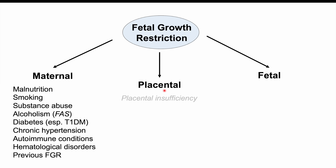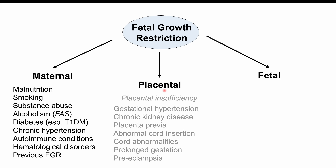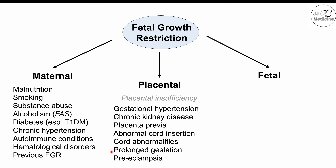In the placental category, causes relate to placental insufficiency — insufficient exchange of gases and nutrients across the placenta. Specific causes include gestational hypertension, chronic kidney disease, placenta previa (where the placenta is too close to the internal cervical os), abnormal umbilical cord insertion or cord abnormalities, prolonged gestation, and preeclampsia.